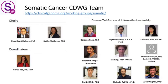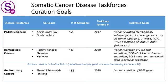The somatic cancer CDWG is co-led by doctors Shashikant Kulkarni and Subha Madhavan. We also have various experts that lead the different disease task forces and informatics activities within our CDWG. Members of each somatic cancer disease task force collectively decide on their curation goals. For example, the pediatric cancer disease task force has shortlisted 44 highly relevant cancer genes across 23 pediatric tumor types for variant curation. Similarly, the hematological and genitourinary cancer task forces have shortlisted candidate genes that are most commonly altered in the respective disease types for curation.